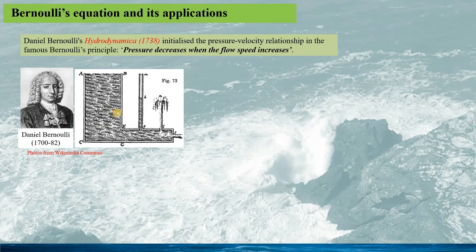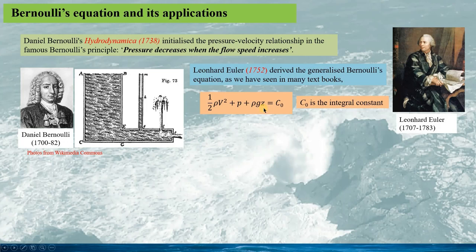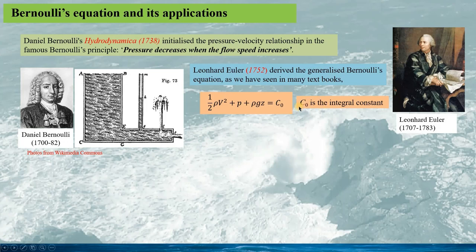So did his father. However, it was Leonhard Euler who in 1752 derived the generalized Bernoulli's equation, as given here as we have seen in many textbooks. Here c0 is the integral constant. So in this specific form, Bernoulli's equation is a conservation form of the specific energies — the energies per fluid volume — kinetic energy, the pressure potential energy, and the normal potential energy for fluids.